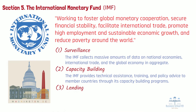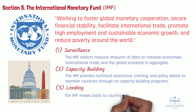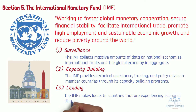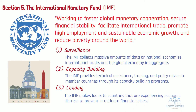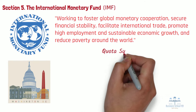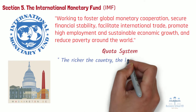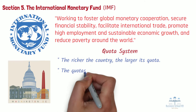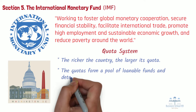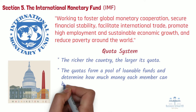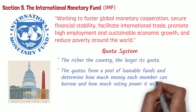Third, lending. The IMF makes loans to countries that are experiencing economic distress, to prevent or mitigate financial crises. Members contribute the funds for this lending to a pool based on a quota system. Quotas are reviewed every five years and are based on each country's wealth and economic performance, which means the richer the country, the larger its quota. The quotas form a pool of loanable funds and determine how much money each member can borrow and how much voting power it will have.